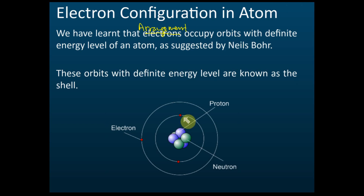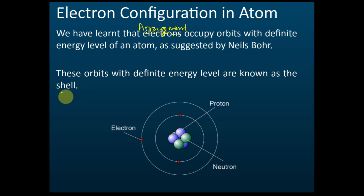Bohr says that electrons don't move randomly. They move following certain orbits with certain energy levels, and that is called a shell — an electron shell. We use the word 'shell' rather than 'orbits,' so try to use 'shell' instead.